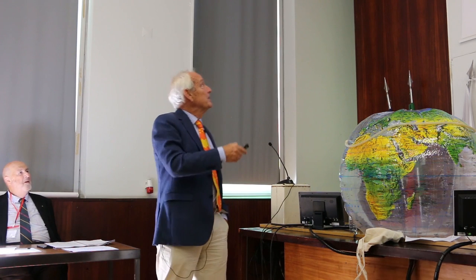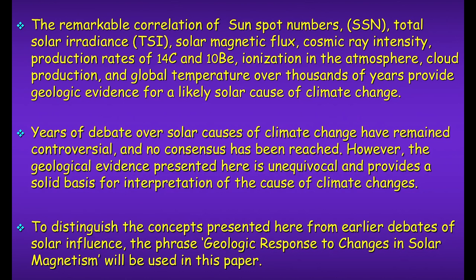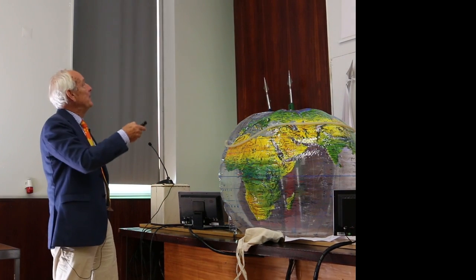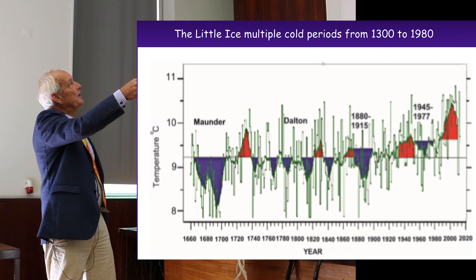Easterbrook's work on little ice ages and climate shows a remarkable correlation of sunspot number — which reflects total solar irradiance, solar magnetic flux, cosmic ray intensity, production rates of C14, beryllium ionization of the atmosphere, cloud production, and global temperature over a thousand years. This provides geological evidence for a likely solar-caused climate change. Because all those parameters tell the same story, it cannot just be a coincidence — that is his main message.